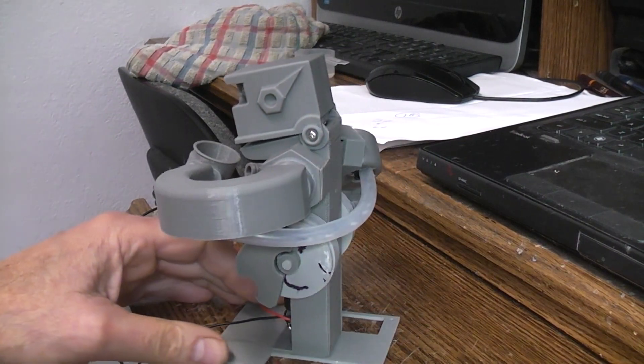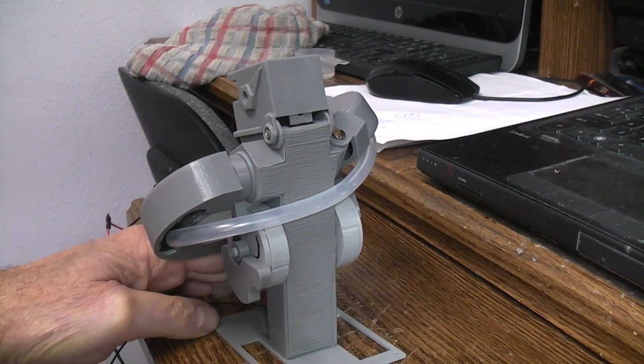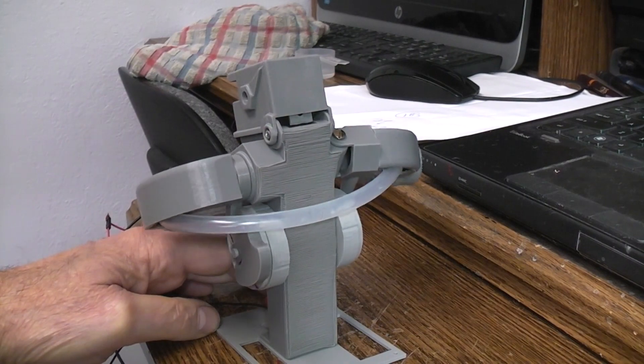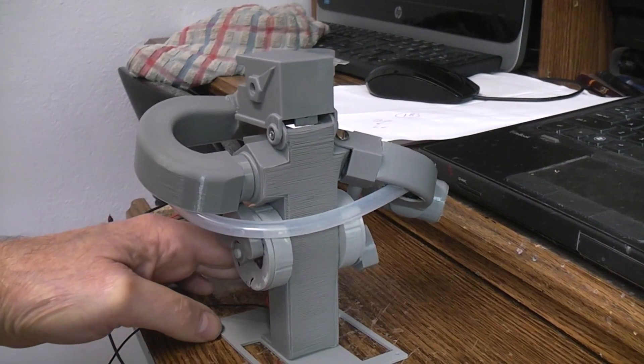It's using my cycloid drive 21 to 1 gear ratio. Here's the tube in the back, and there's the water traveling over to the bottle side.